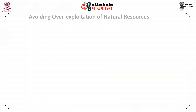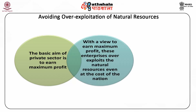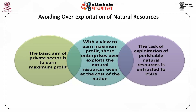Avoiding overexploitation of natural resources: The basic aim of private sector is to earn maximum profit. With a view to earn maximum profit, these enterprises overexploit the natural resources even at the cost of the nation. Therefore, the task of exploitation of perishable natural resources is entrusted to PSUs so that these resources are not totally exhausted.